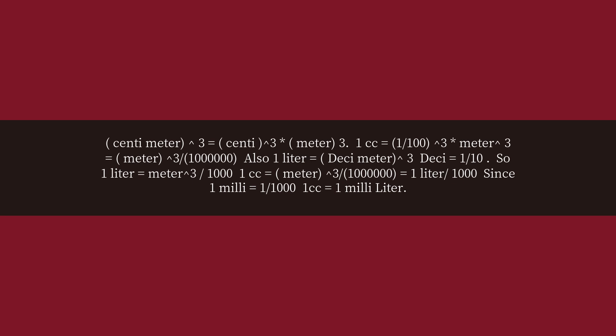That equals meter^3 / 1,000,000. Also, 1 liter equals decimeter^3, and deci equals 1/10. So 1 liter equals meter^3 / 1000. Therefore, 1 cubic centimeter equals meter^3 / 1,000,000, which equals 1 liter / 1000.